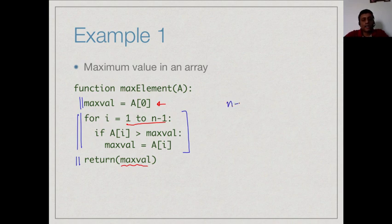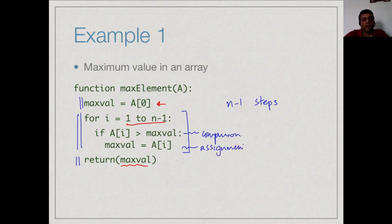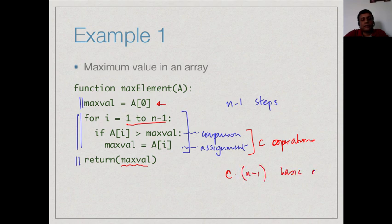This loop takes exactly n-1 steps. The worst case is any input because we must scan from beginning to end to find the maximum value. In every iteration we do at least one comparison, which is one basic operation, and an assignment may or may not happen. Since we ignore constants, this is some constant c times n-1 basic operations. Ignoring c and the minus 1, this algorithm is linear — it takes O(n) time.